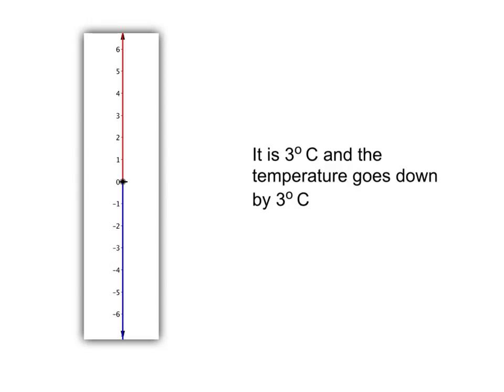If the temperature is 3 degrees centigrade and it must come down by 3 degrees centigrade, our picture will look like this. We start at 3 and we come down by 3 degrees, and we end up at 0.